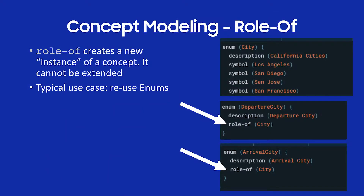The sister concept to that, but different, is role of. What role of does is create an instance of. The best way to explain it is with this example: I have an enumeration of California cities — Los Angeles, San Diego, San Jose, etc. I'm building a travel capsule and I want a departure city concept and an arrival city concept. The possible values are the same set, so I create a base enum of City, then DepartureCity takes a role of City, and ArrivalCity takes a role of City.